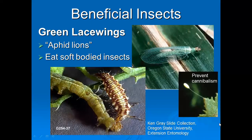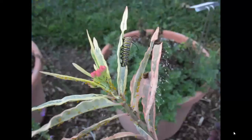Green lacewings — you can see the adult here, and you can see why they're given their name. There's also a brown lacewing. This is the larva stage, the one that eats the most insects. This is the egg on a long filament on the plant, and that is to keep them from eating each other. Mother nature does some really unique things. Here we've got green lacewing eggs and here we have the aphids — these larvae are just waiting to hatch, and as soon as they hatch, they will have lots of aphids to eat.